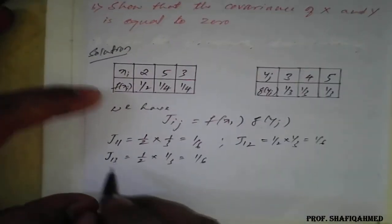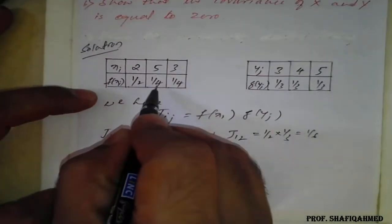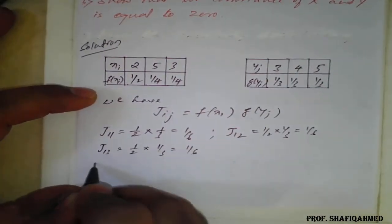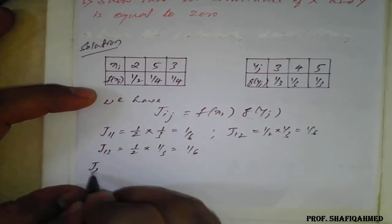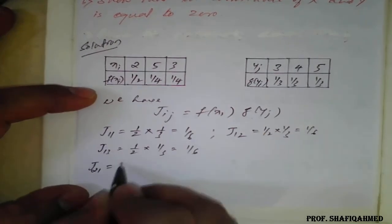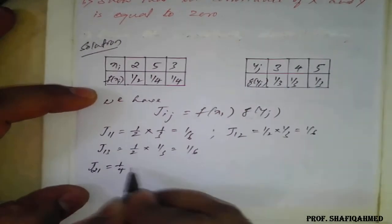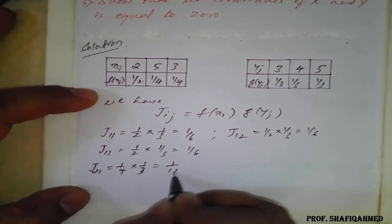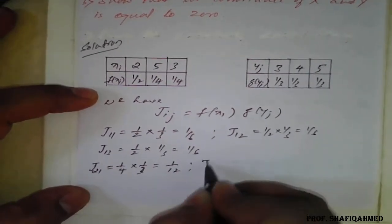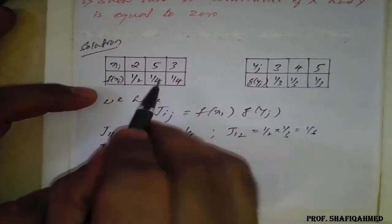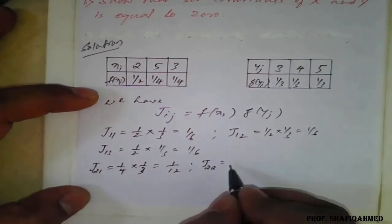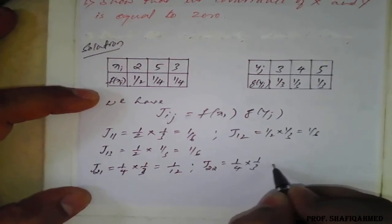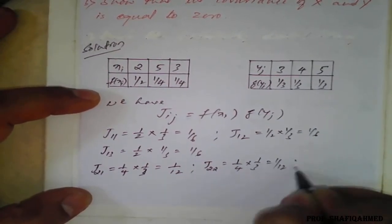Now for the second row: J(2,1) — second row, first column — is 1/4 × 1/3 = 1/12. Then J(2,2) — second row, second column — is also 1/4 × 1/3 = 1/12.